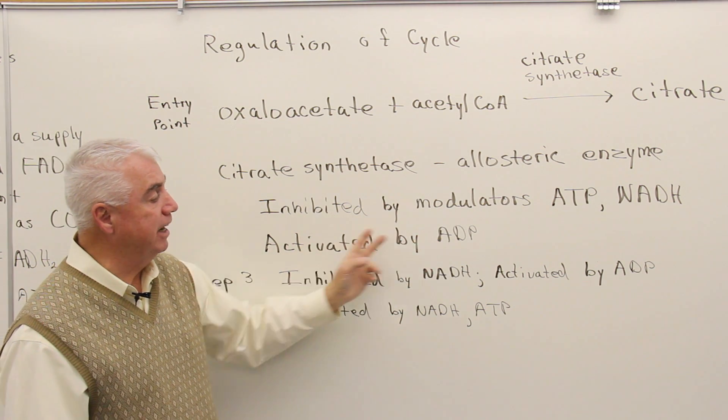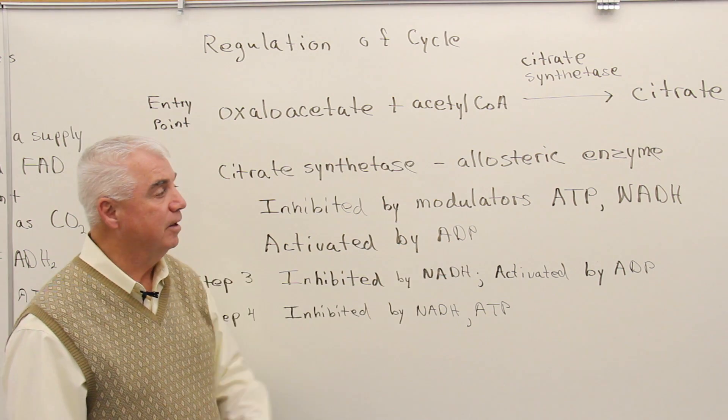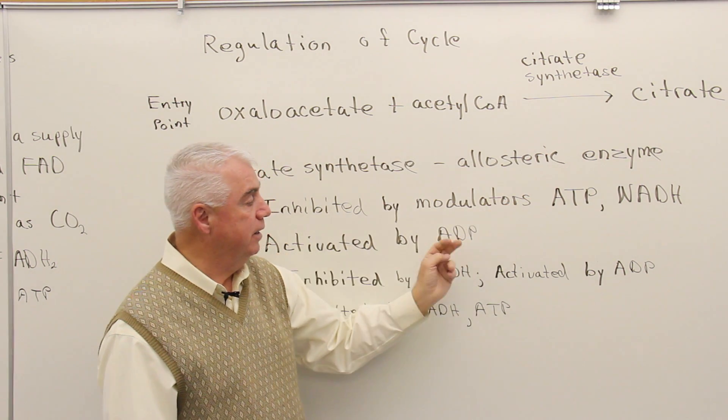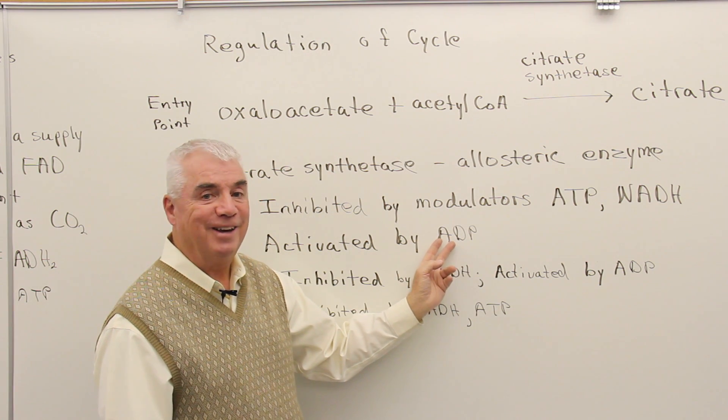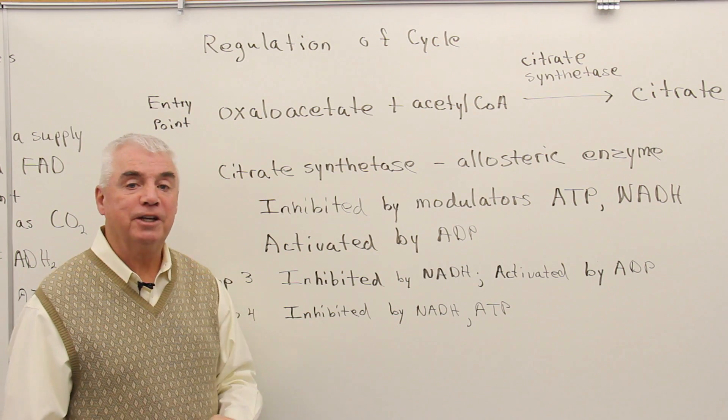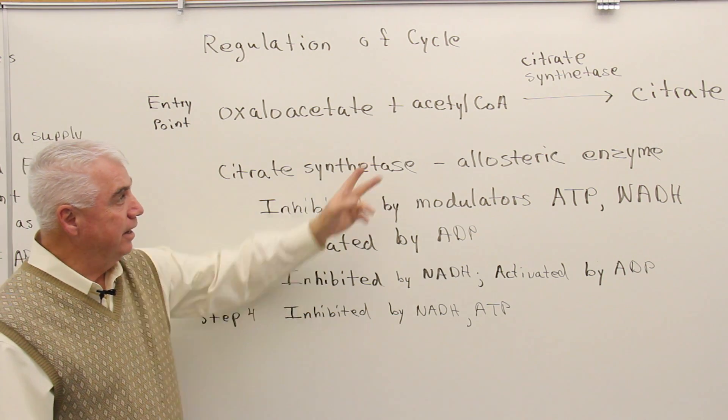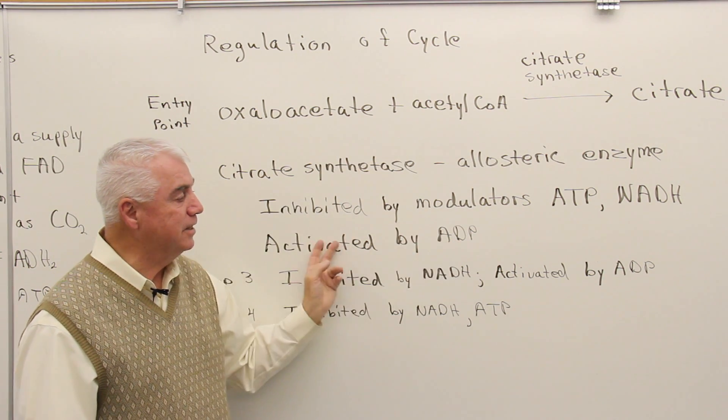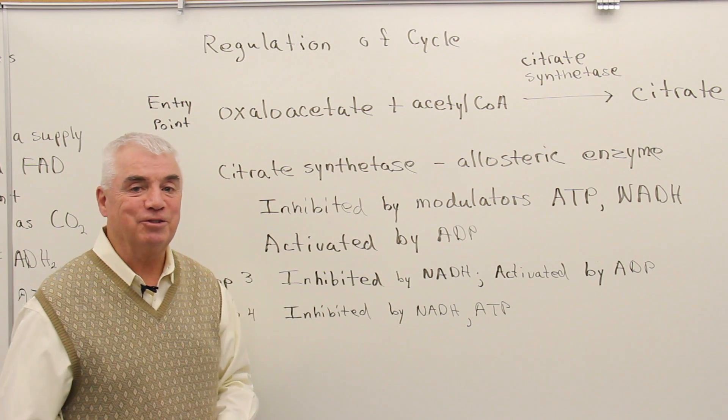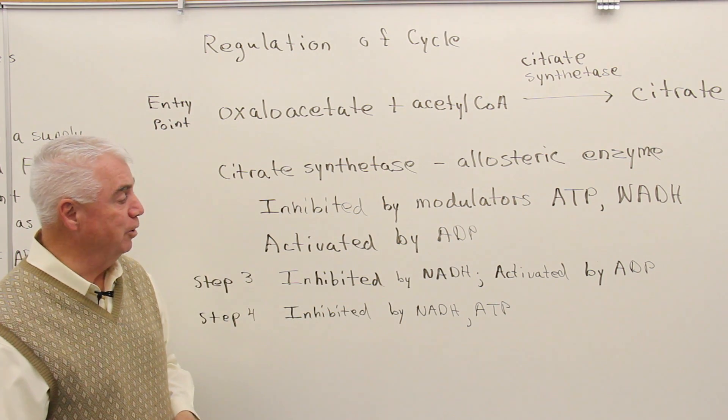On the other hand, citrate synthetase is activated by ADP. When ATP is used by the body to supply energy, it gives rise to ADP. So ADP level indicates how much energy is needed. If the enzyme is activated by ADP, it's turning on the citric acid cycle to produce more energy.